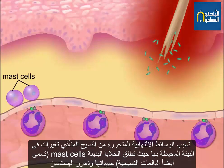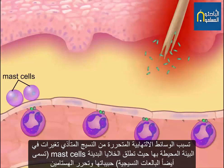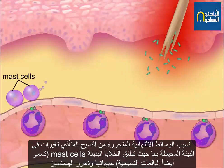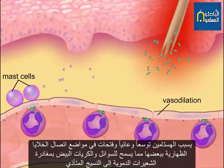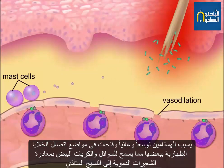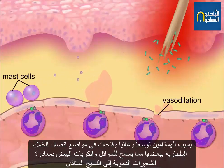The inflammatory mediators released by the injured tissue bring about changes in the environment that cause mast cells to degranulate and release histamine. Histamine causes vasodilation and an opening of the junctions between the endothelial cells, allowing fluid and leukocytes to leave the capillary and enter the infected tissue.